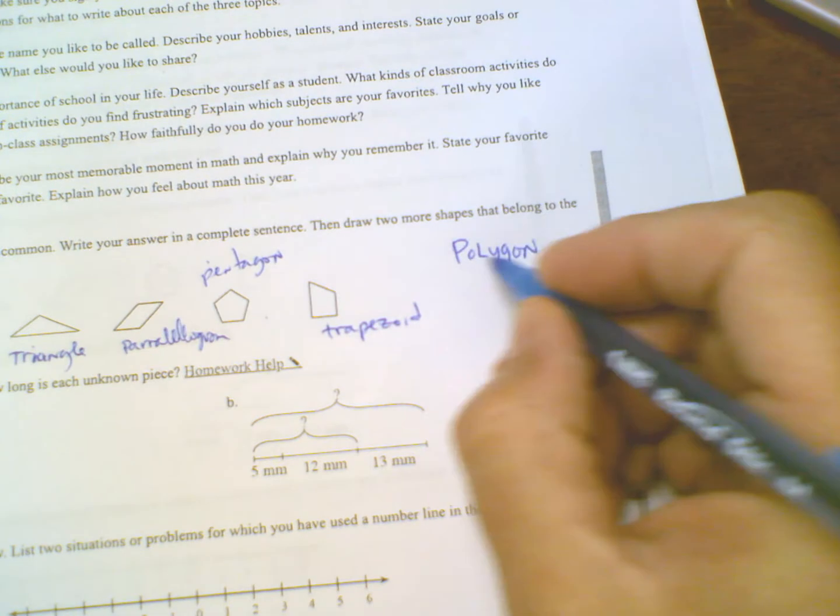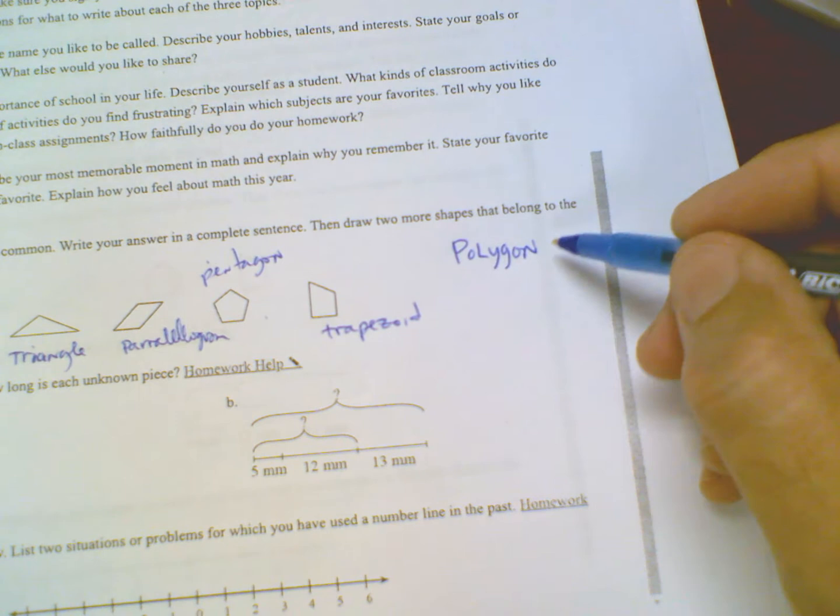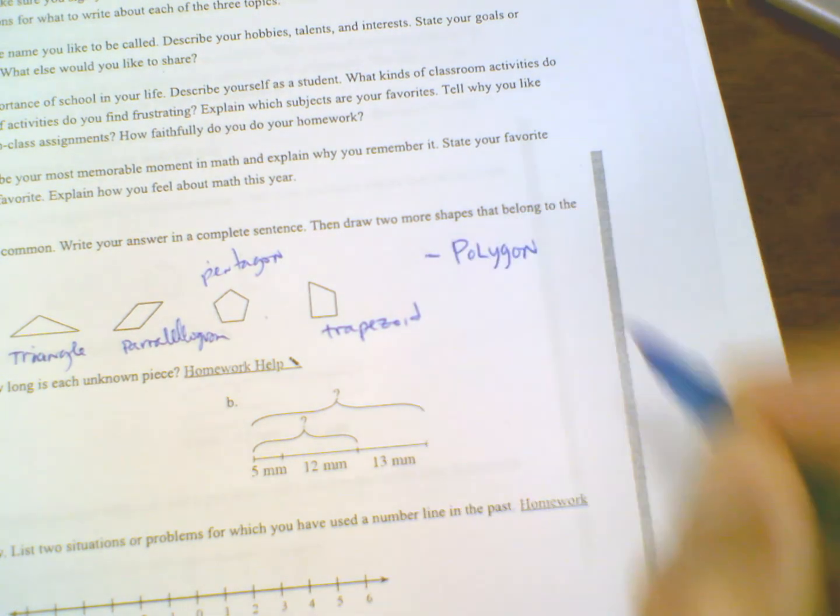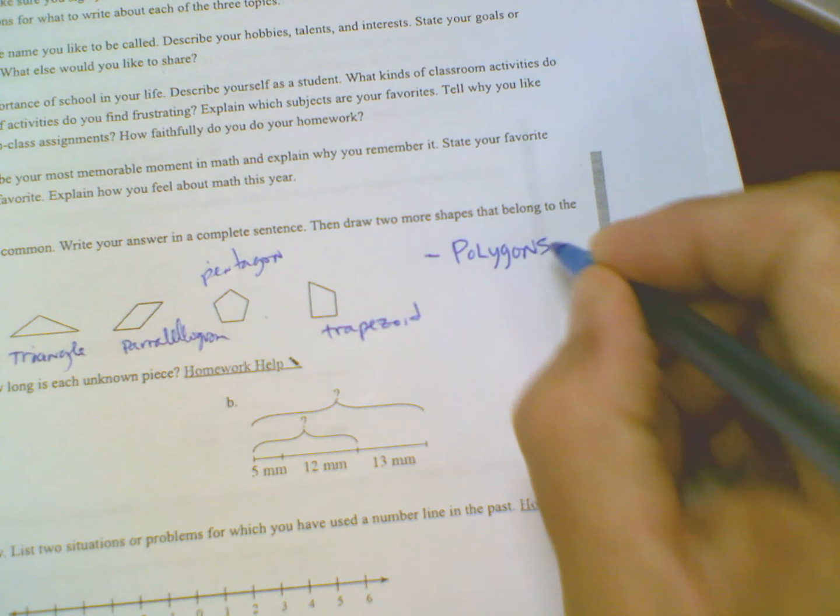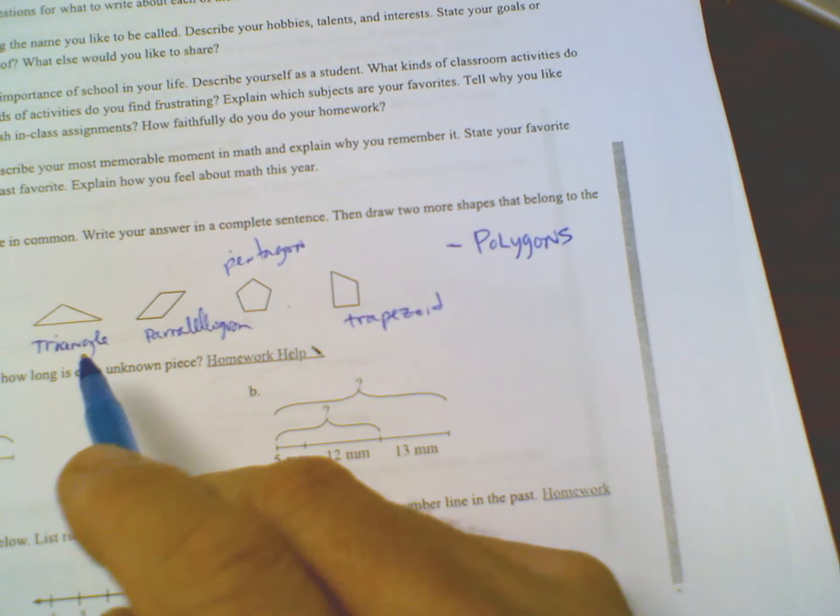We can write that in a complete sentence: they are all polygons. I'm going to have you do that. I'm not going to write it down for space here, but that would be one thing - they're all polygons. The other thing to look at is maybe their angles.